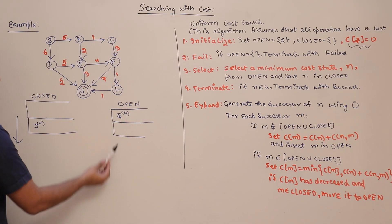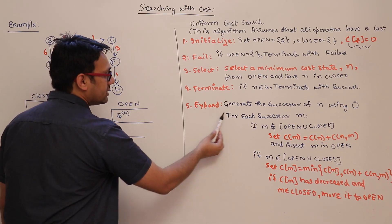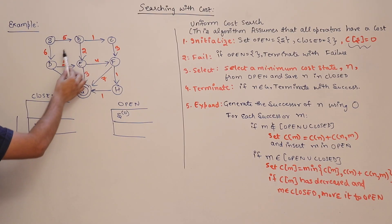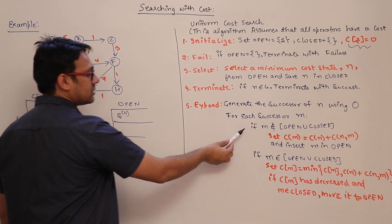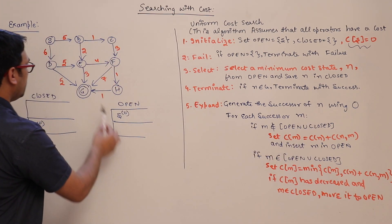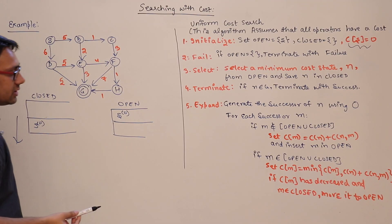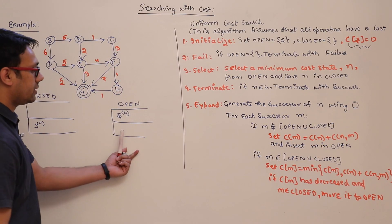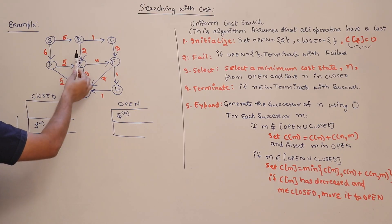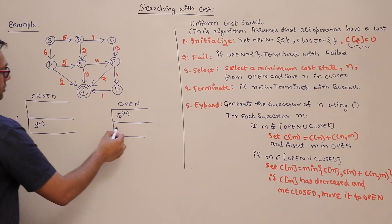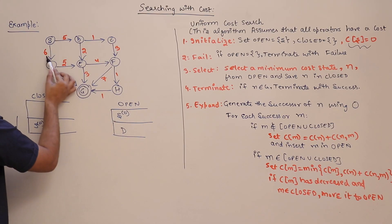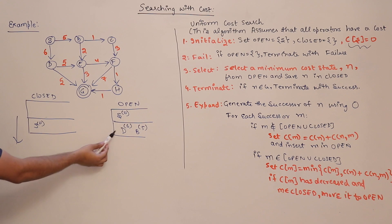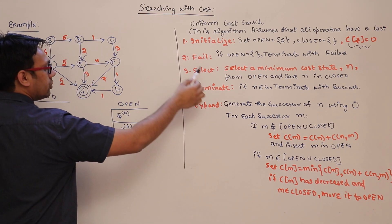Check if N is a goal state — S is not, so we do not terminate. Now expand S and generate its successors. The successors of S are B and D. Since B and D are not present in open or closed, we set their costs and insert them into open. The cost of D is 0 + 6 = 6, and the cost of B is 5.